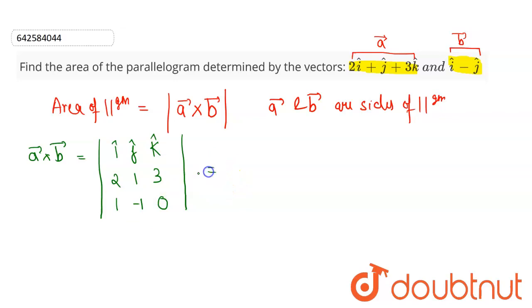So this is equal to now solving this determinant along row 1. So this will be i cap, so 1 into 0 minus 3 into minus 1. So this will be 3. Minus of j cap, so this will be 2 into 0 minus 3 into 1. So this will be minus 3. Plus now it will be k cap, 2 into minus 1 minus 1 into 1. So this will be minus 2 minus 1.